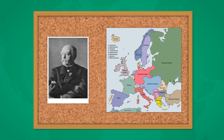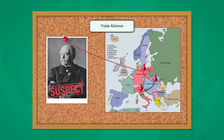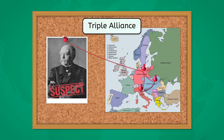In the late 19th century, alliances were forming in Europe. Prussian leader Otto von Bismarck, fearing French retaliation after the Franco-Prussian War, created the Dual Alliance between Germany and Austria-Hungary. Italy later joined in on the secret agreement, forming the Triple Alliance. Bismarck also formed a treaty with Russia, further isolating France.